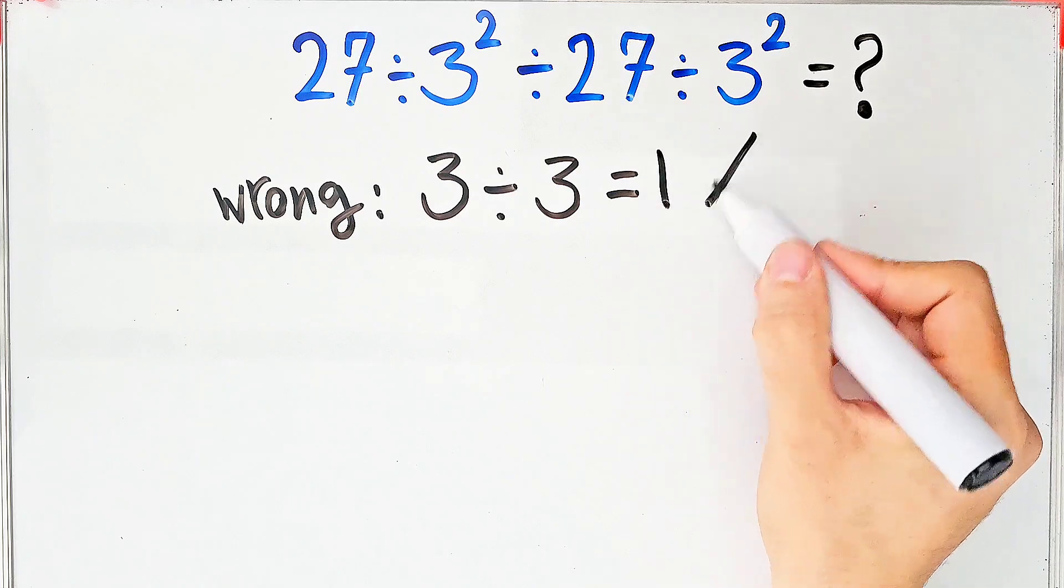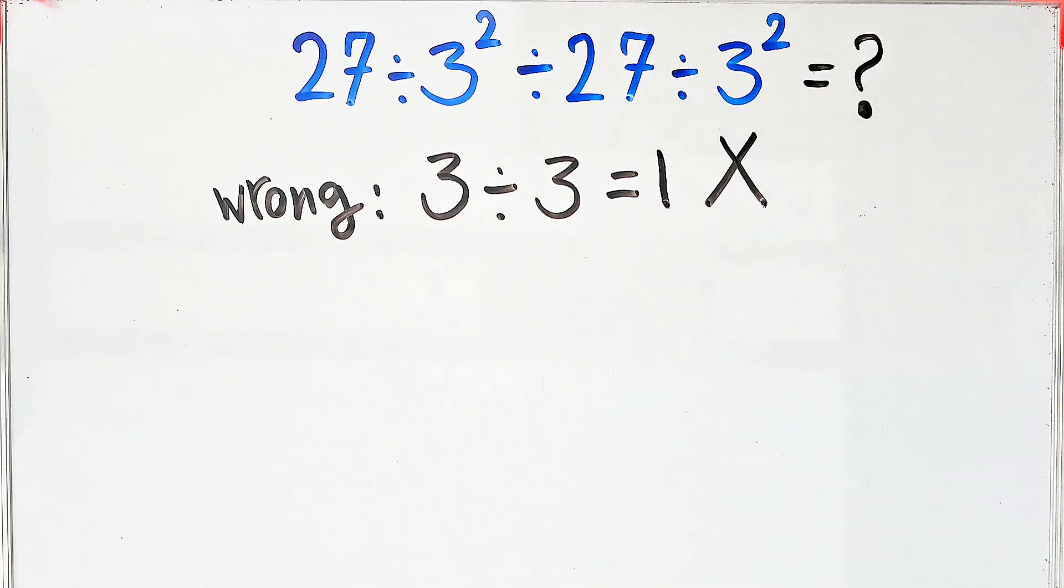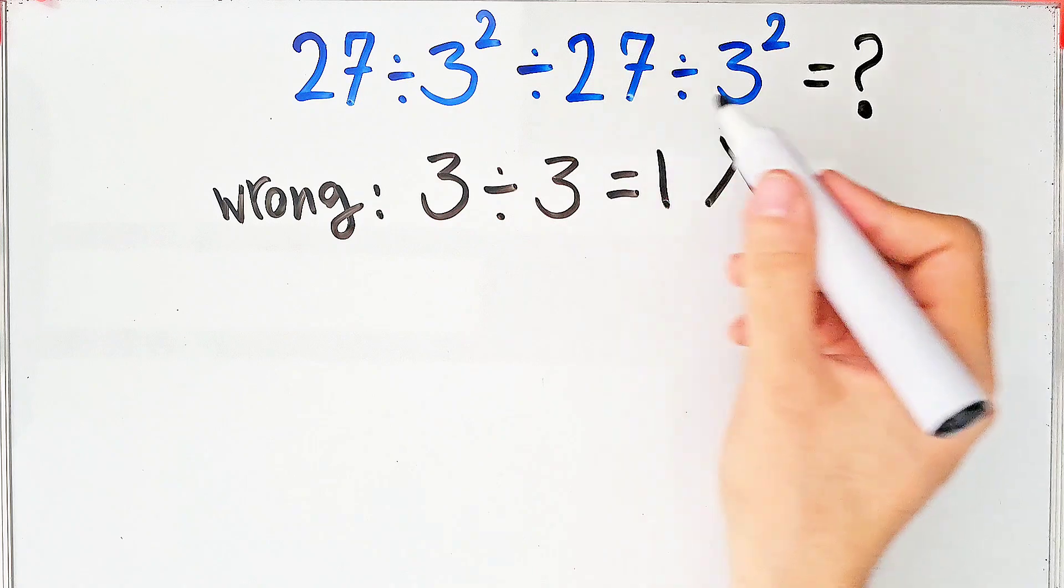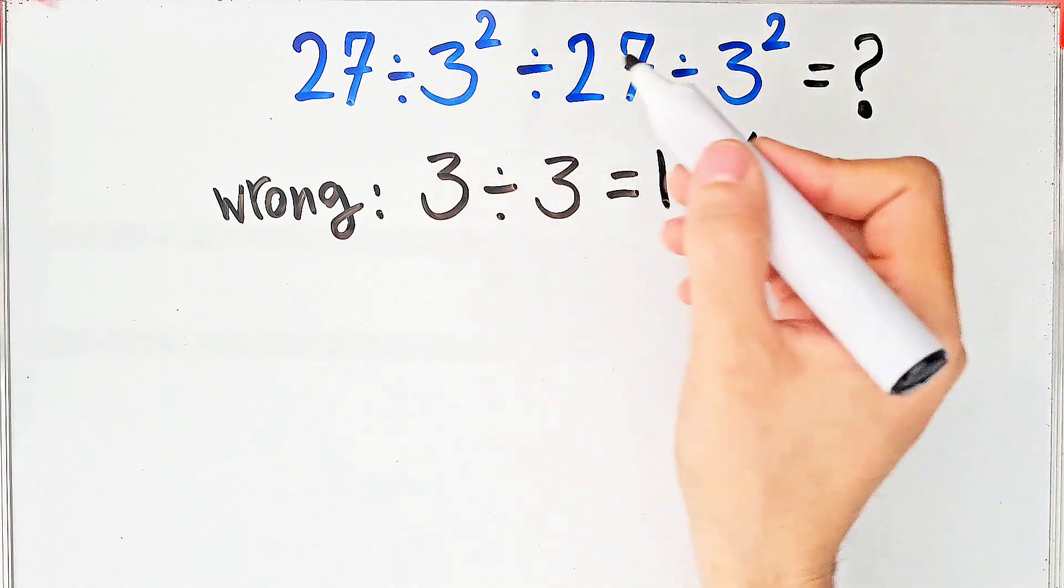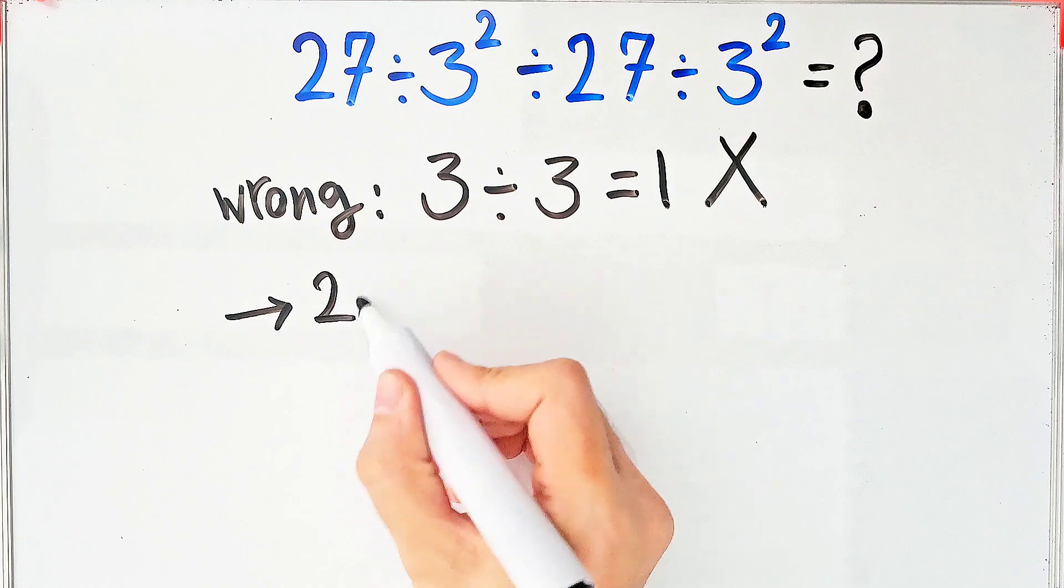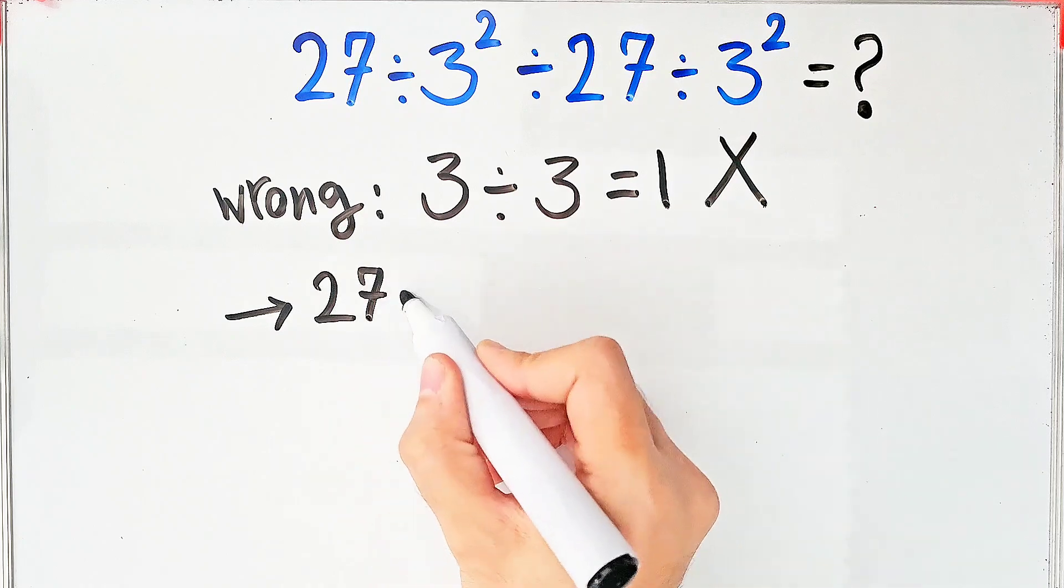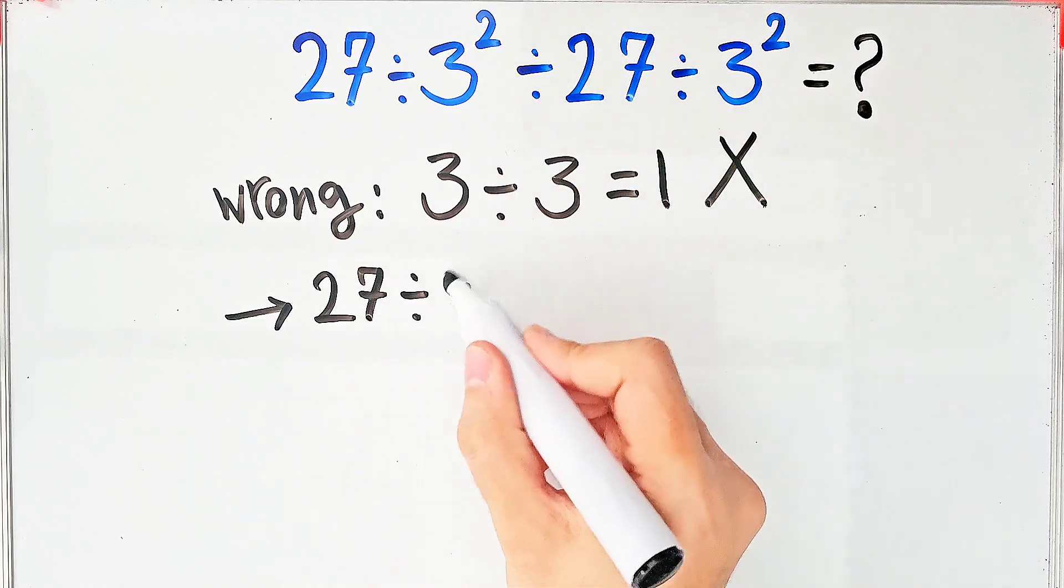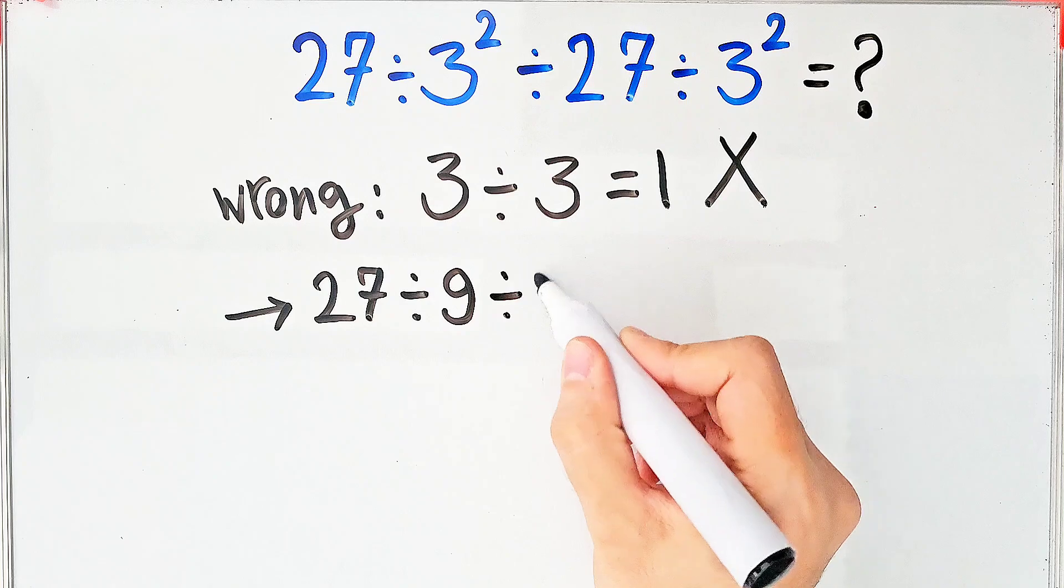But this answer is definitely wrong. Let's solve this question step by step together. Because we have 3 divisions, we start from the left and simplify the question. We have 27 divided by 9, then divided by 27, then divided by 9.